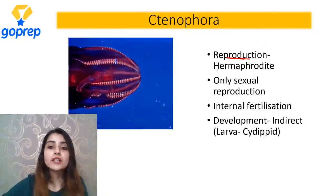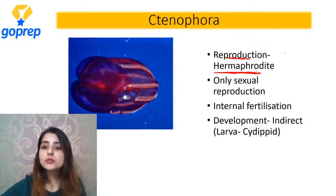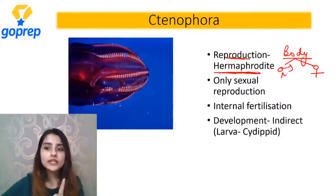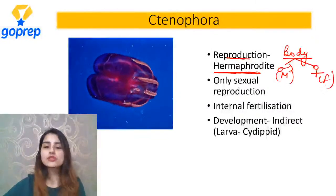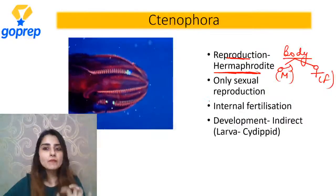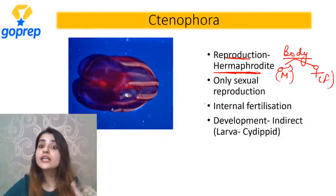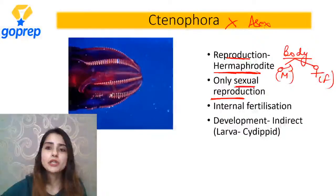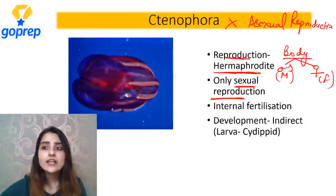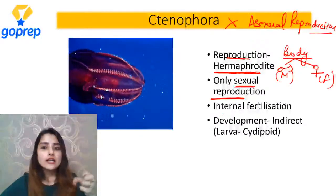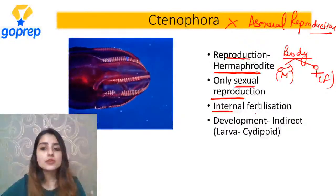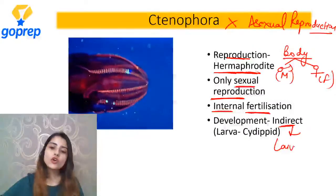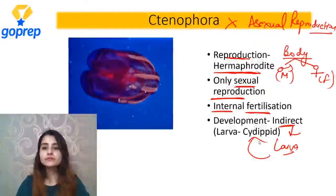Reproduction ki baat karein - they are also hermaphrodite - same body ek toh male gamete bana sakti hai plus female gamete bhi. Ctenophora mein there is no asexual reproduction - sirf sexual reproduction hoti hai. Inhone apne gametes release kiye, fertilization kahan hoti hai - internal, not outside in water. Development indirect hai - kyunki larva banta hai. Larva ka naam hai Cydippid larva. Whereas Coelenterata mein kaun sa larva tha - Planula larva.